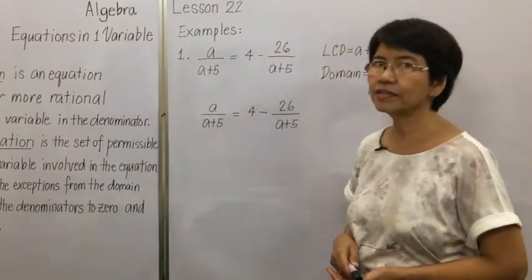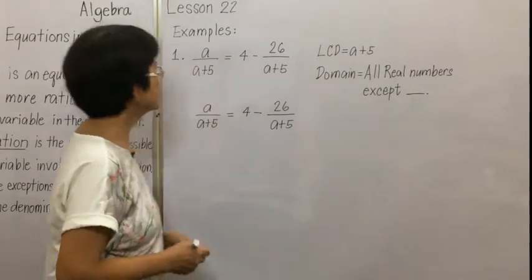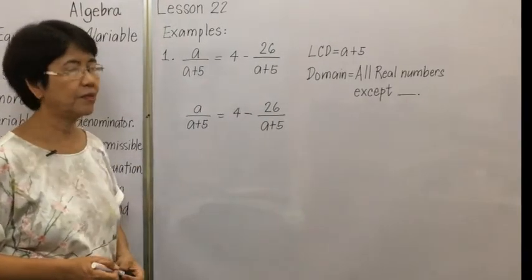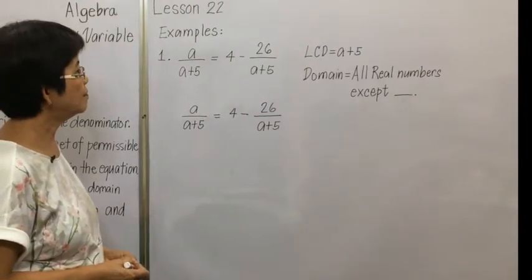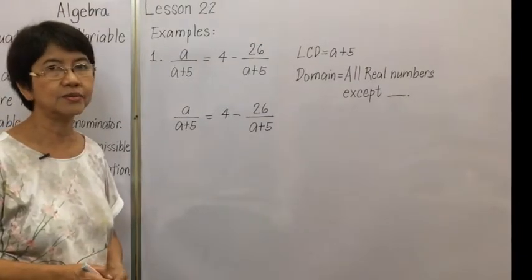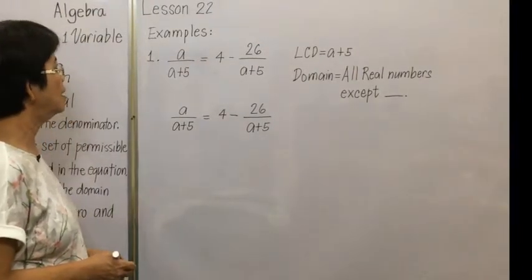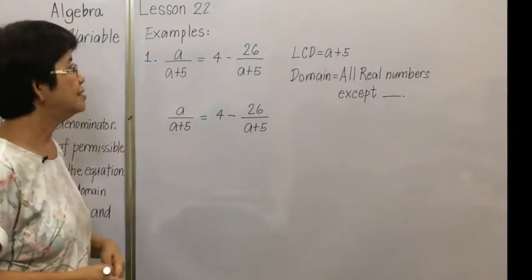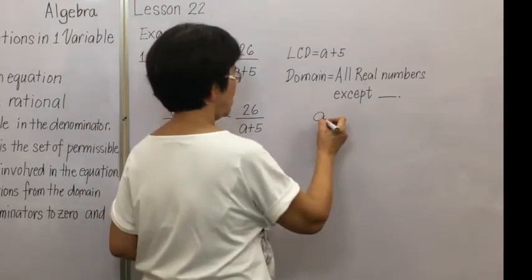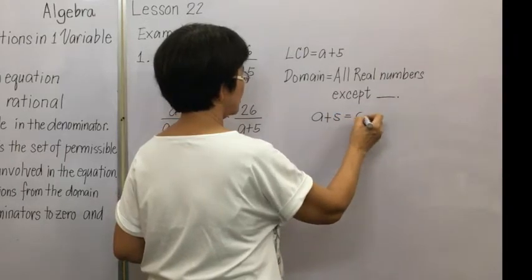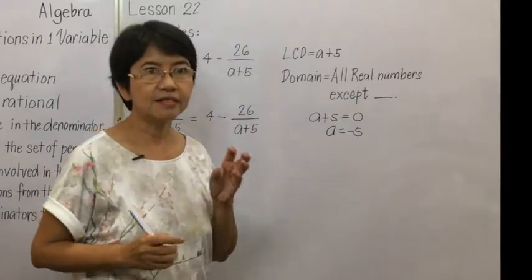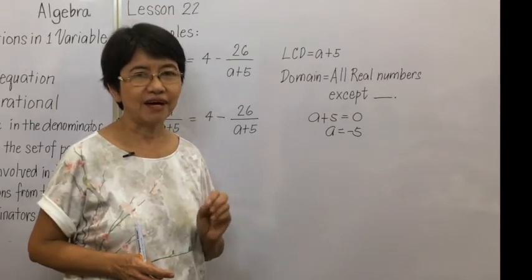Let's take example number one. We have a fractional equation and our first step is to find the domain by looking at the denominators, finding the LCD, and then equating the LCD to zero and solving for the variable. Our variable here is a. The LCD is a plus 5. Setting a plus 5 equal to zero gives us a equals negative 5. So negative 5 is the value that cannot be the value of a.